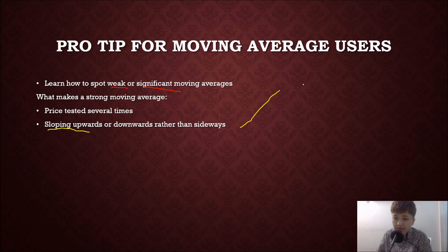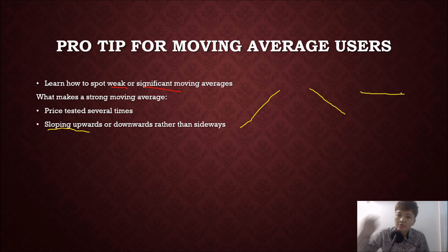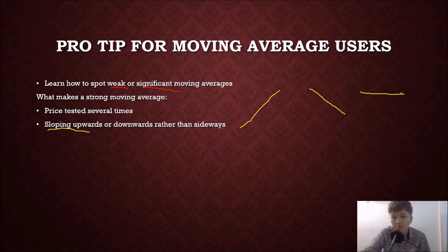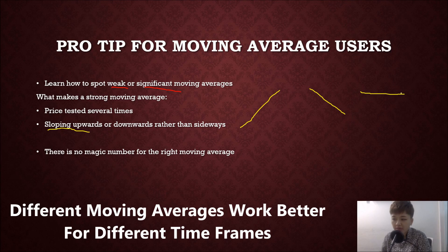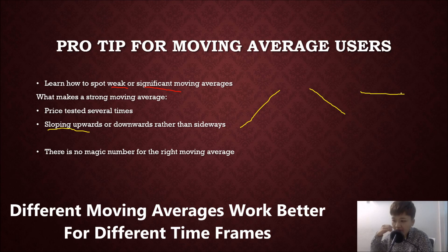How do you know if a bullish trend is strong? If the moving average is sloping upwards, it's a strong bullish trend. If it's sloping downwards, high chance it's a bearish trend. When the moving average is going sideways, the trend is not as strong or is changing direction. A lot of traders search for the 'magic' moving average number — there's no real magic number. You need to determine which moving average is suitable for which time frame: smaller time frames suit smaller MA values, larger time frames suit larger MA values.